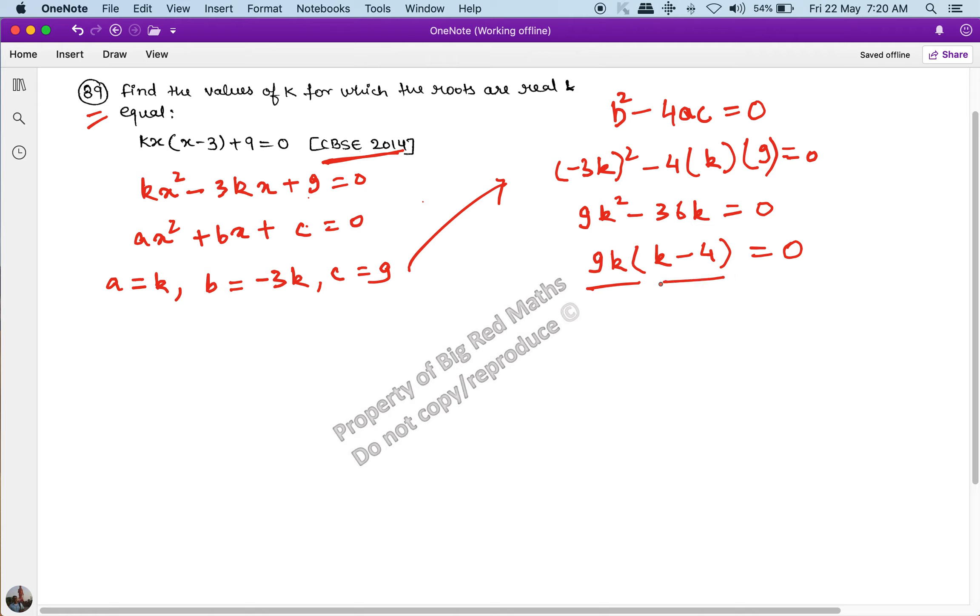Either this is 0 or this is 0. If 9k equal to 0, which gives you k equal to 0, this is one condition. Or k minus 4 equal to 0, then k will be equal to 4. And these two are the solutions, these two are the possible values of k.